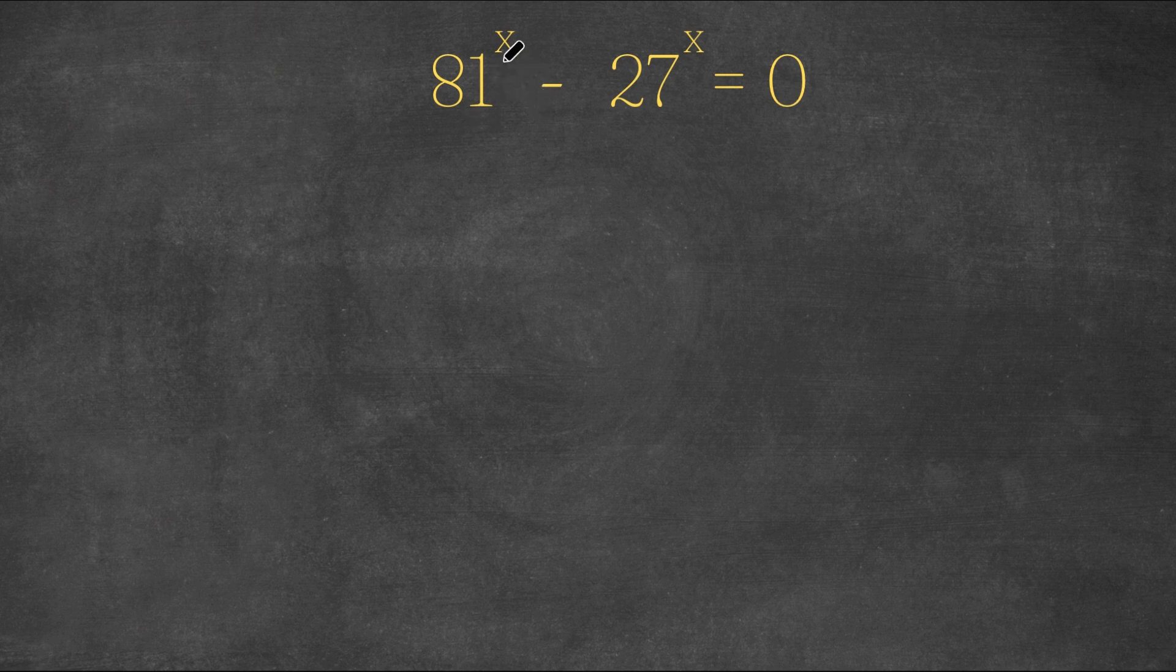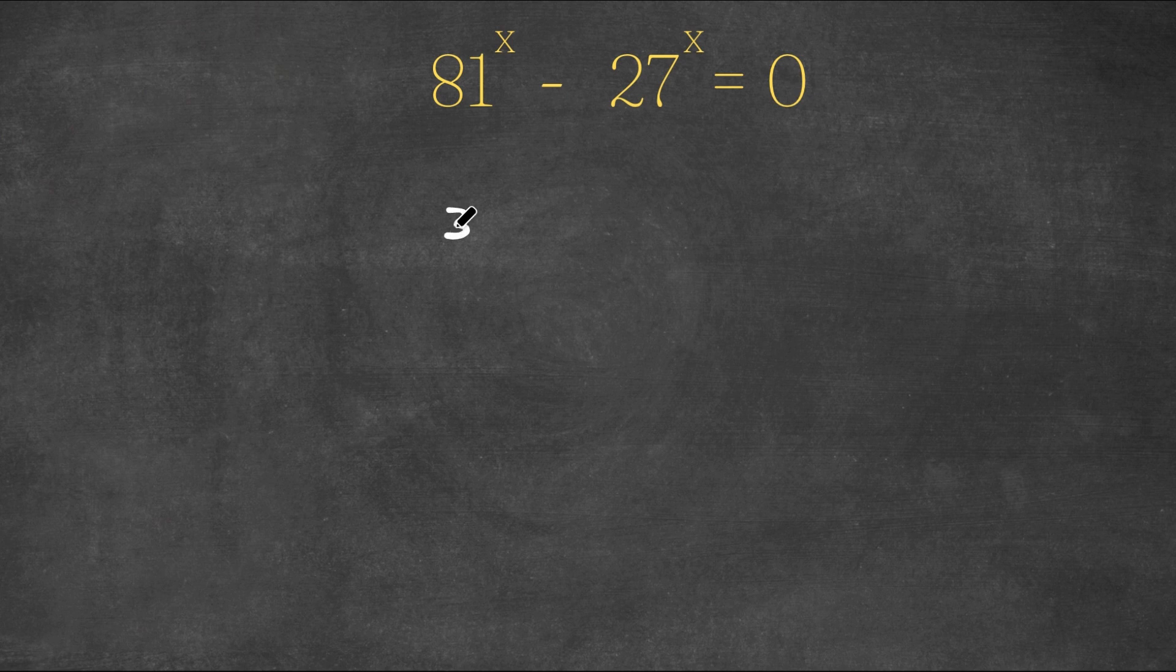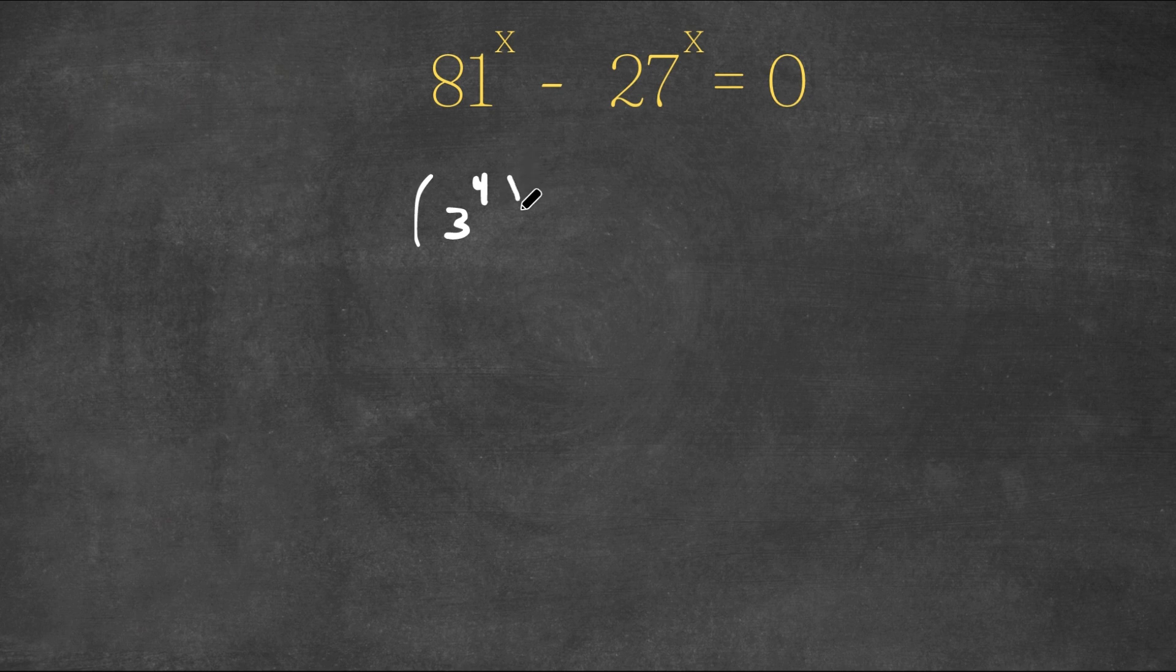Now what I'm first going to do is I'm going to change 81 to 3 to the power of 4. So I'm going to replace 81 with 3 to the power of 4. So now we have 3 to the power of 4 to the power of x minus, now I'm going to change 27 to 3 to the power of 3.